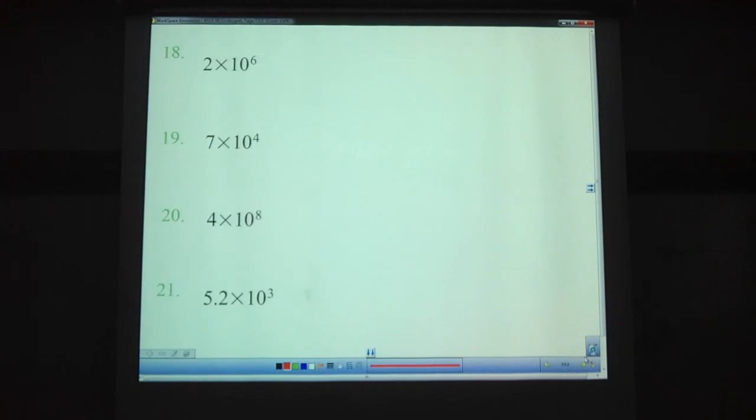2 times 10 to the 6th. Try these out. Change these from scientific notation to standard notation. Okay, so if we got 10 to the 6th, that would be 2, and then we move the decimal 6 places, 2 million. 7 times 10 to the 4th, 70,000. 4 times 10 to the 8th, 400 million. This one, a lot of people are getting wrong, and I know exactly why. It's 5,200. If we move that 5.2, move the decimal 3 spaces, 1, 2, 3, and put zeros there, it's 5,200. We do not just add three zeros to the end. That is not how scientific notation works. You're moving the decimal place three times.